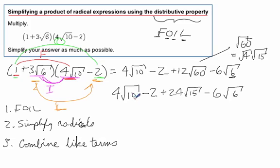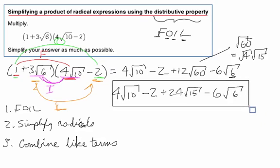So here's a radical 10. Do we have any other radical 10s? No. Here's a whole number, negative 2. Do we have any just whole numbers? No. Do we have any other radical 15s? Nope. And any other radical 6s? Nope. So this one comes out to be quite a long answer, but that is the answer right there.